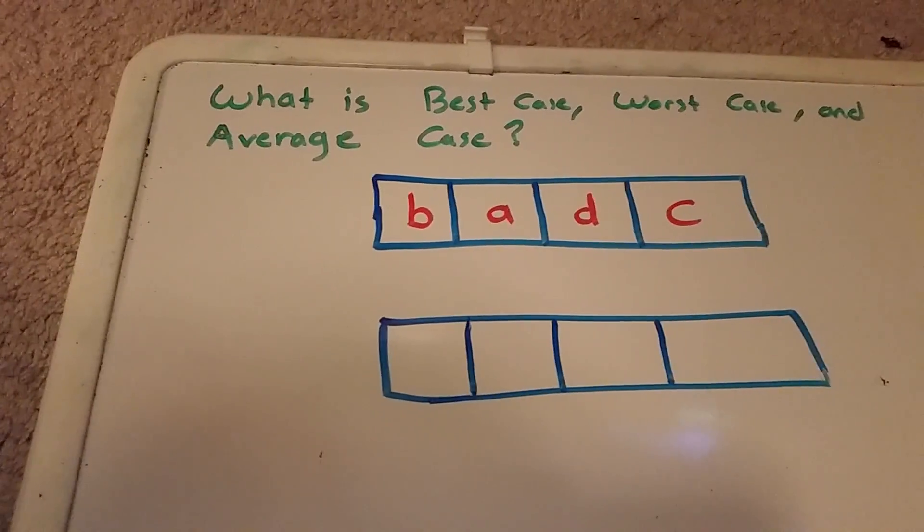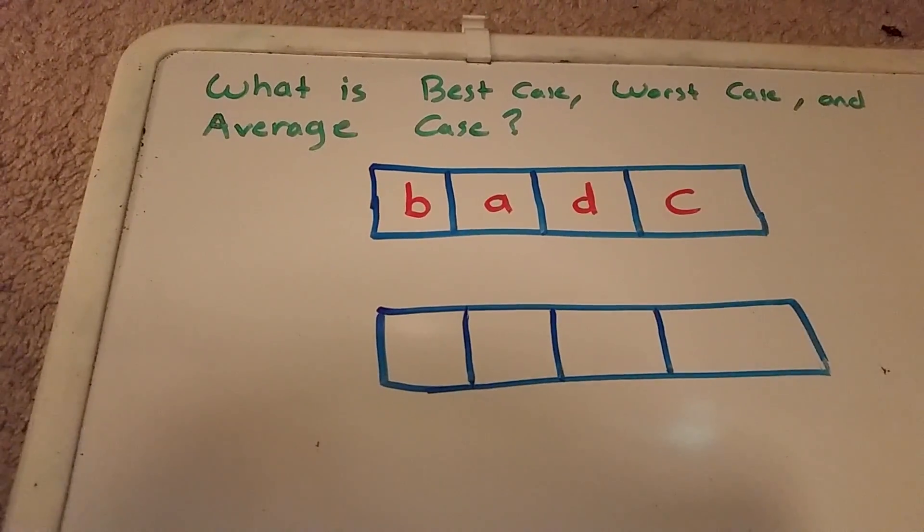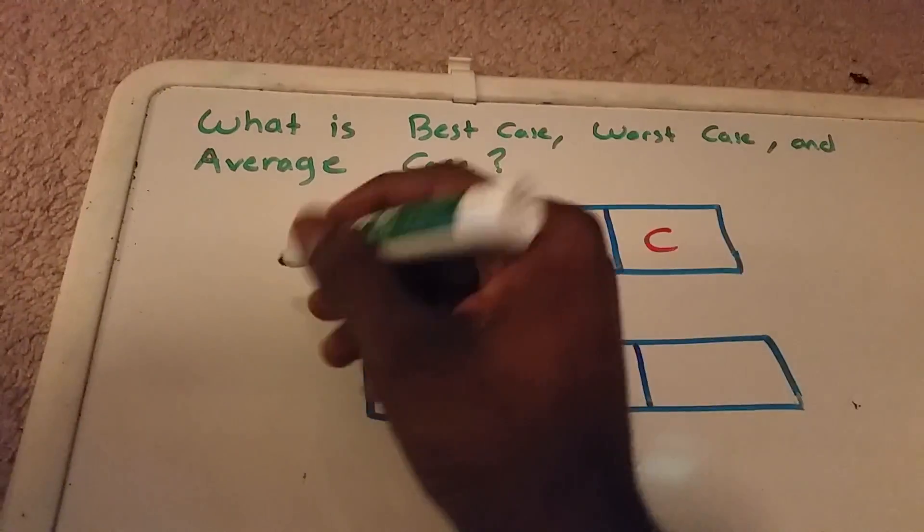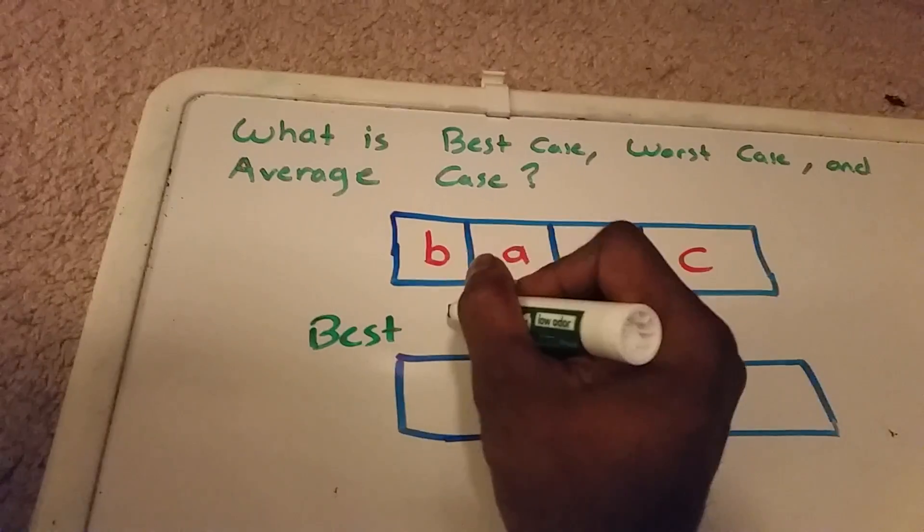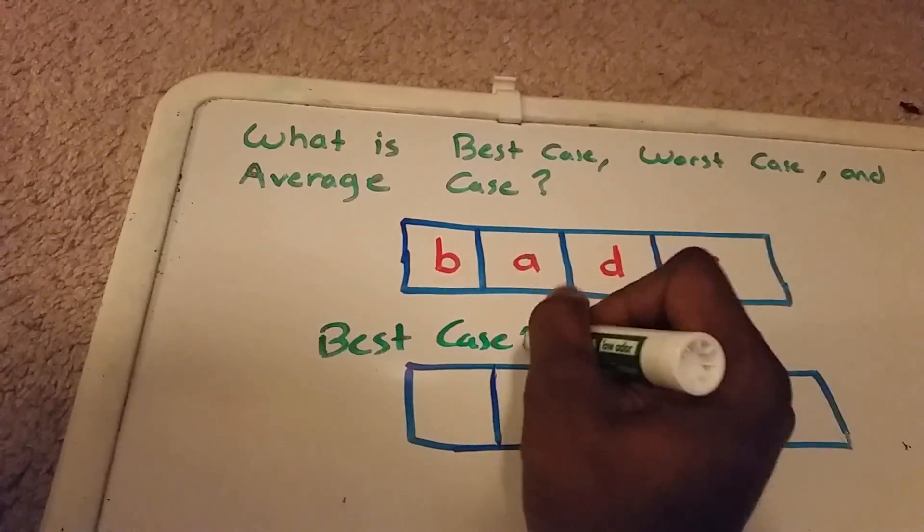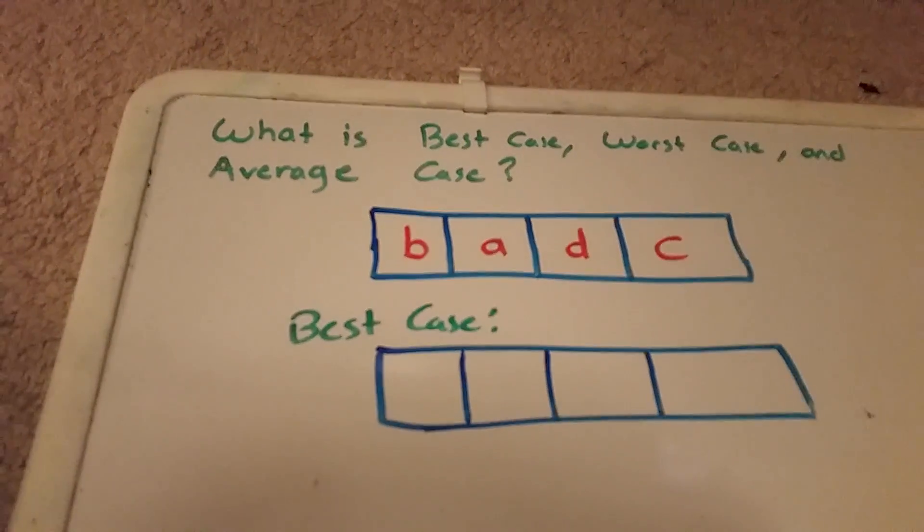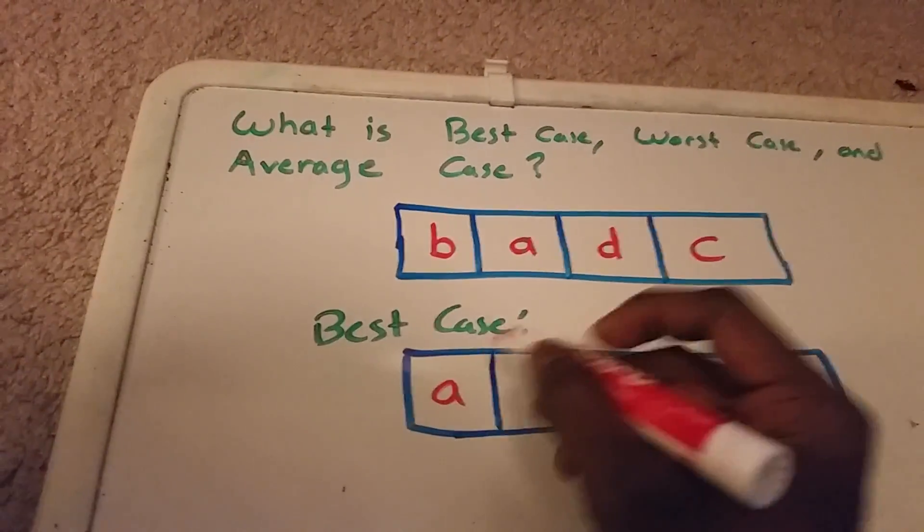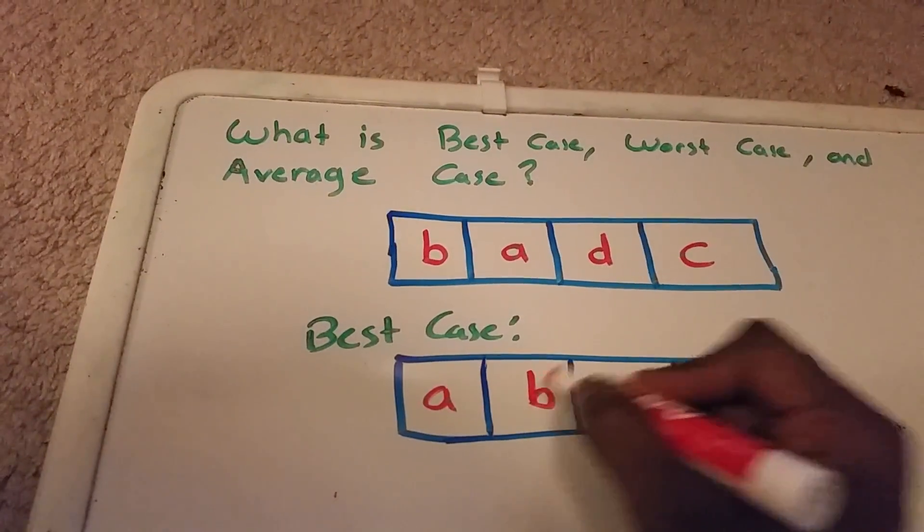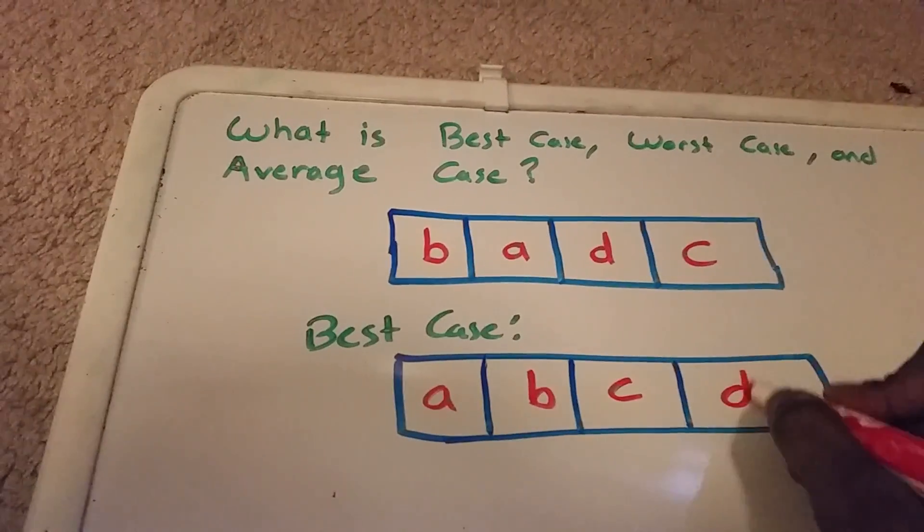So a best case scenario for the list. I'm going to write best case here. For a list that we want to sort would be for it to already be in alphabetical order. A, B, C, D.